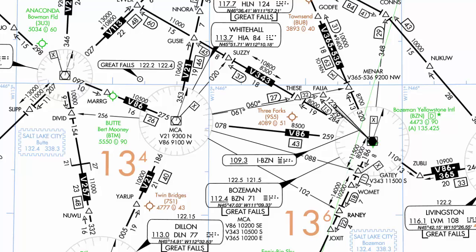The last altitude we're going to look at is the Off-Route Obstacle Clearance Altitude, or OROCA. OROCAs are the large numbers depicted in each quadrangle on the low altitude chart — for example, 13,400 or 13,600. These altitudes ensure obstacle clearance of 1,000 feet in flat terrain and 2,000 feet in designated mountainous terrain. They're used when planning a flight using RNAV or GPS that doesn't follow an airway system, so there's no published MEA or MOCA for your route. OROCAs do not guarantee navigational or communications coverage — they simply ensure proper obstacle clearance through the quadrangle.